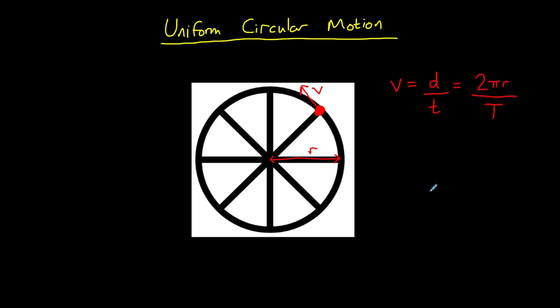And since frequency, the number of revolutions per second, is equal to 1 over the time period, that means we can write the velocity as V equals 2 pi R F.